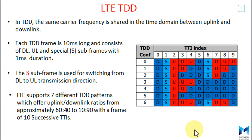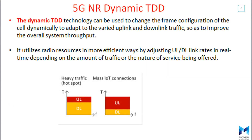In LTE TDD, the concept of static configuration — the fixed ratio between uplink and downlink — exists. But for 5G New Radio, the dynamic TDD concept is a new feature that can be used to change the configuration of the cell dynamically, to adapt to the variation in uplink and downlink traffic and improve overall system throughput.